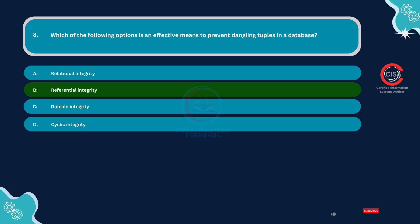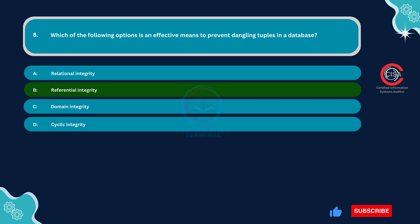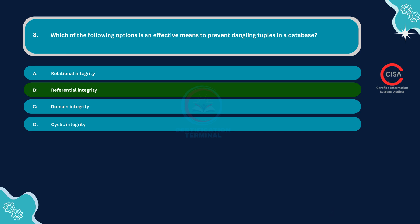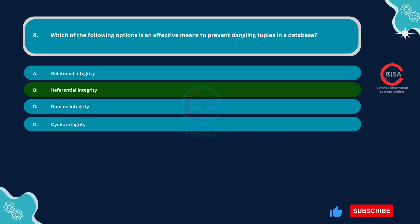By enforcing referential integrity, databases can maintain data consistency and integrity. This prevents situations where foreign key values in child tables refer to non-existent primary key values in parent tables, which would result in dangling tuples.